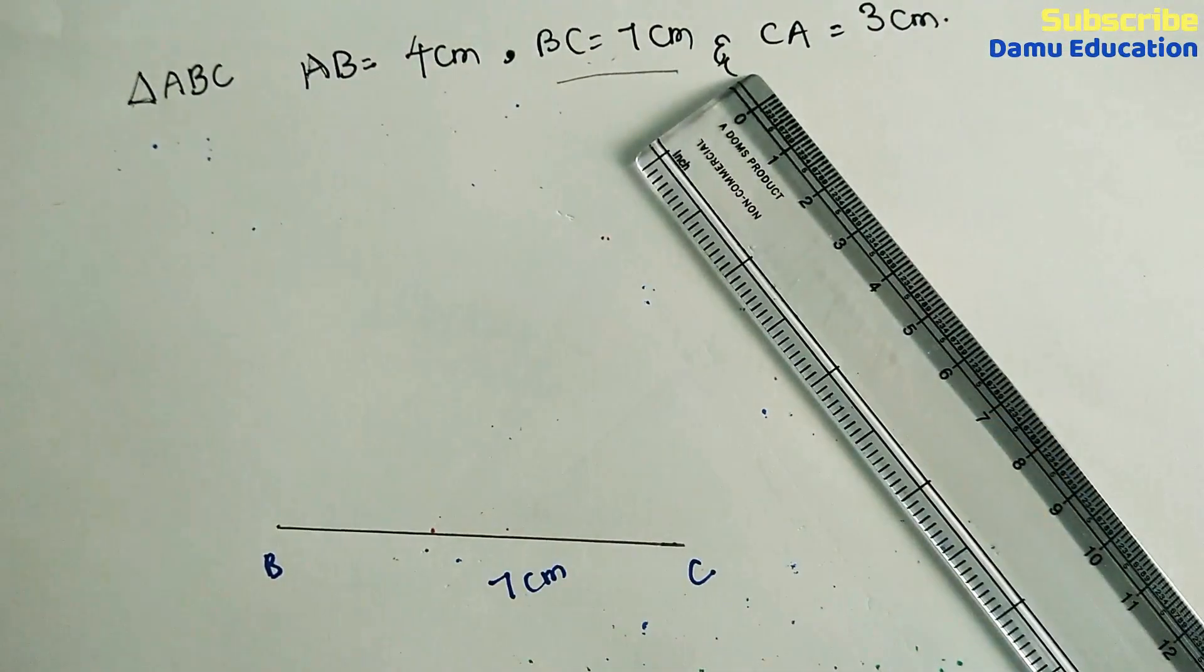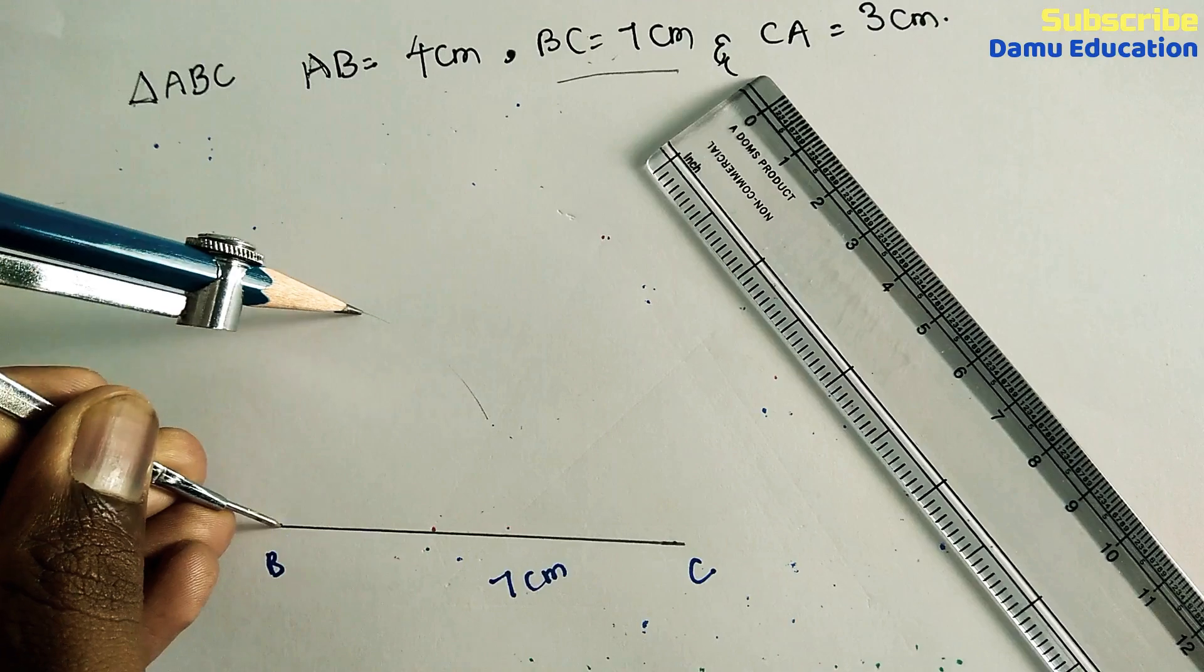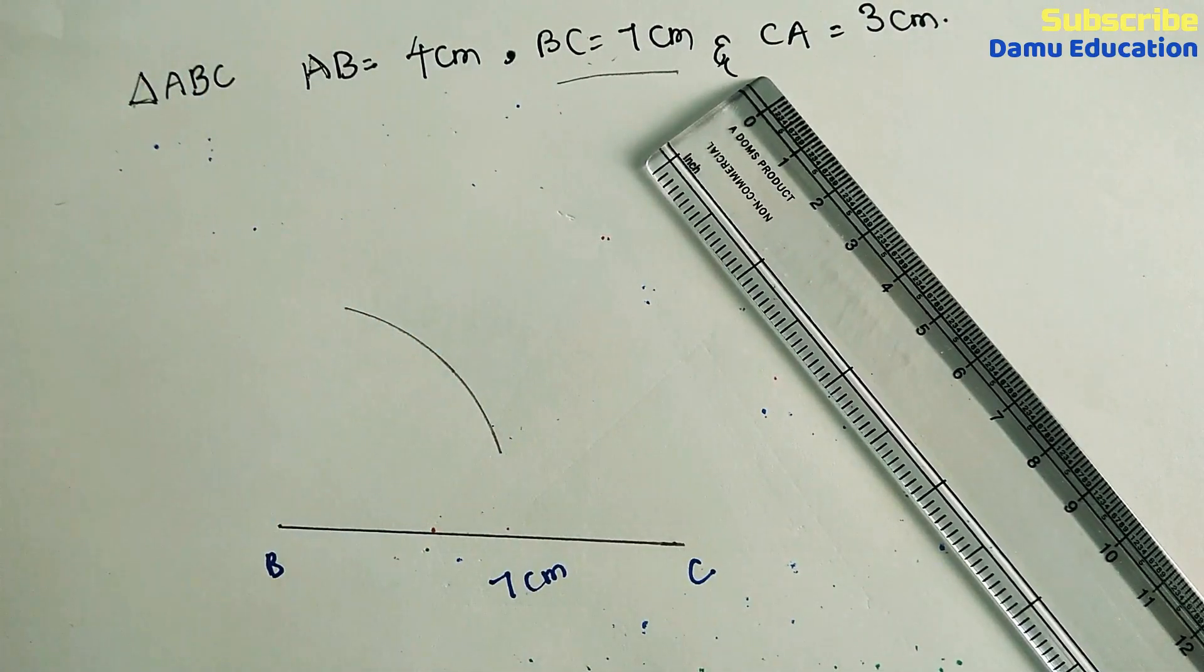So make B as the center and draw an arc with radius 4 centimeters. Then CA is there, CA is 3 centimeters.